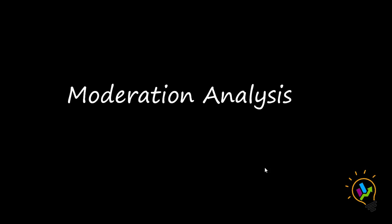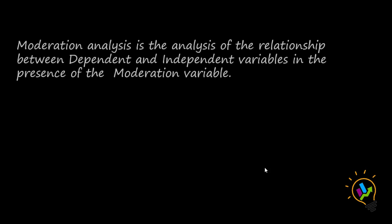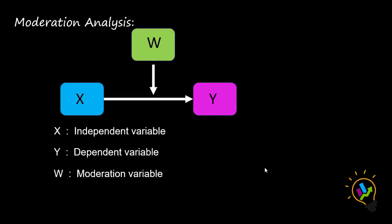Hello, welcome to Easy Statistics. In this video I am going to discuss moderation analysis. Moderation analysis is the analysis of the relationship between dependent and independent variables in the presence of a moderation variable. In moderation analysis we have three types of variables: independent variable, dependent variable, and moderation variable. We are going to find the impact of the independent variable on the dependent variable in the presence of the moderation variable. Let us discuss this with the help of an example.